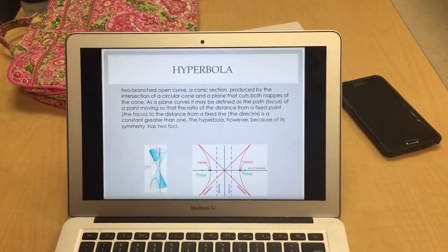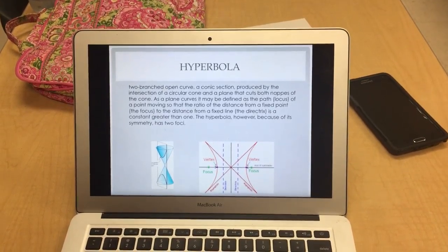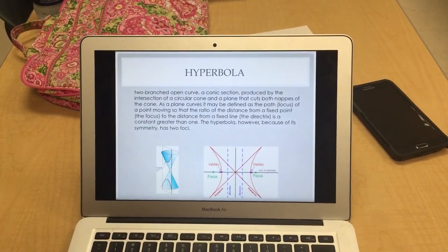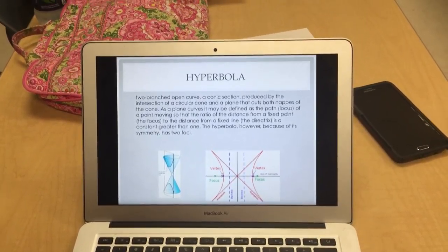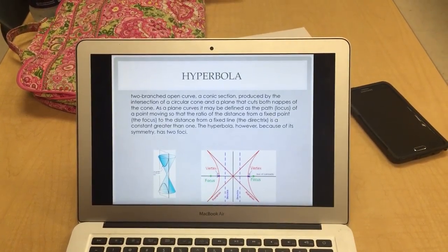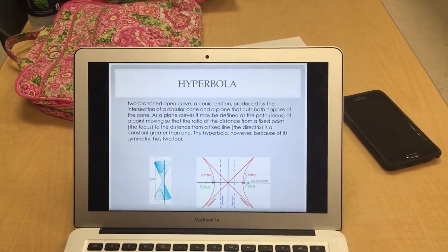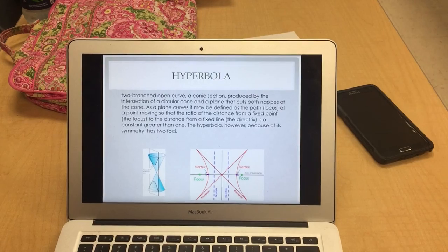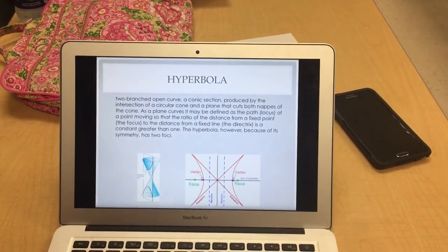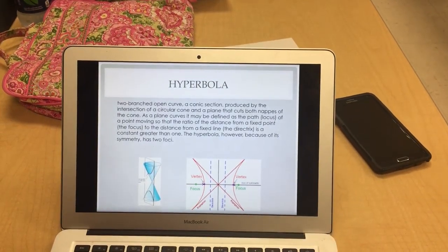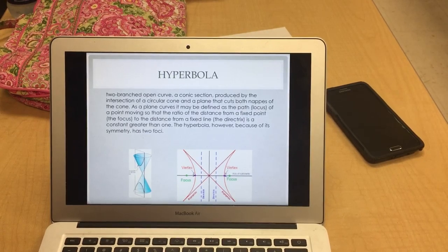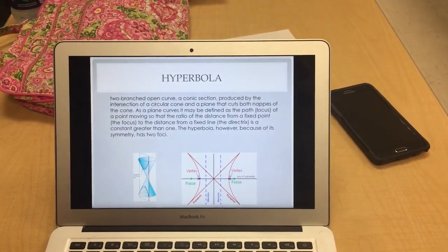So I am going to talk about the hyperbola. It is a two-branched open curve, a conic section produced by the intersection of a circular cone and a plane that cuts both naps of the cone. As a plane curve, it may be defined as the locus of a point moving so that the ratio of the distance from a fixed point, the focus, to the distance from a fixed line, the directrix, is a constant greater than one. The hyperbola, however, because of its symmetry, has two foci.